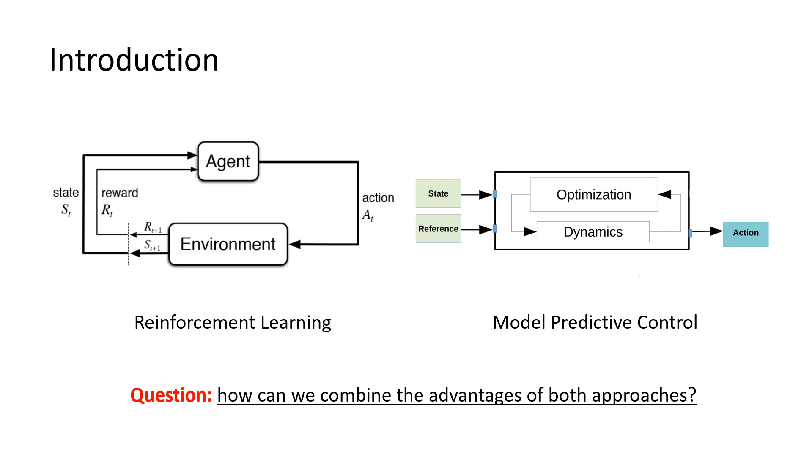On the other hand, model predictive control is a powerful approach for dealing with complex systems with the capabilities of handling uncertainty and disturbance. In this work, we are trying to answer the question: how can we combine the advantages of both approaches?